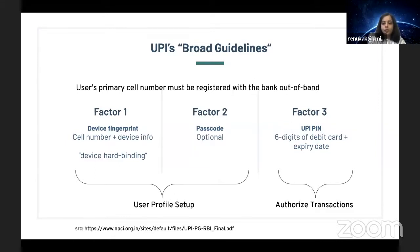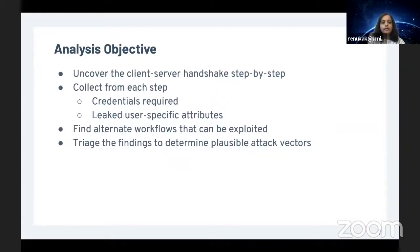The second factor is the passcode, which is optional. The first two factors are used for user profile setup or registration. The third factor, the UPI PIN, is used to authorize transactions and requires six digits of the debit card number and expiration date—details printed on the card. Our analysis aimed to uncover the client-server handshake between a UPI app and server, identify credentials required at each step, check for leaked user attributes, identify alternate exploitable workflows, and triage findings to determine plausible attack vectors.